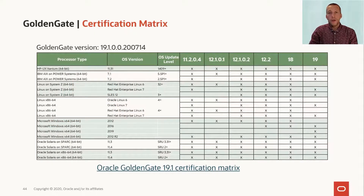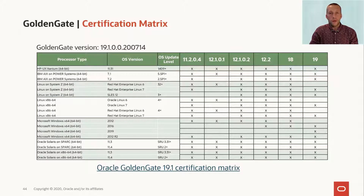For your reference, I have included a certification matrix which shows which database versions and platforms are certified to use with the GoldenGate version that you can get from the OCI Marketplace. If your database version or platform is not listed, you probably have to use another version of GoldenGate, and the offer doesn't apply, so you would have to pay a license for GoldenGate. But if your database and platform is listed and certified with GoldenGate 19.1, then you can use the GoldenGate image for free.